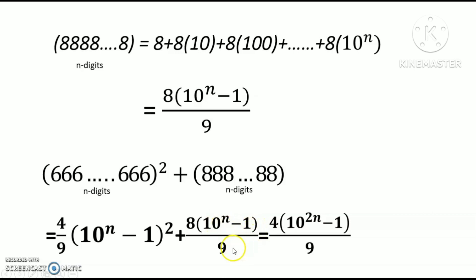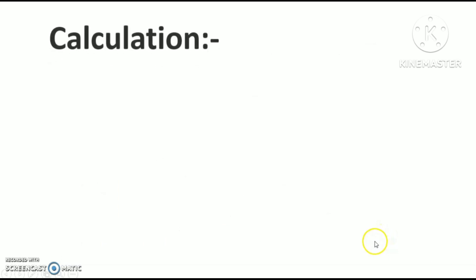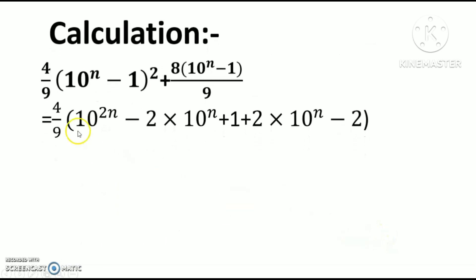(4/9)(10 to the power n minus 1) whole square plus (8/9)(10 to the power n minus 1). Now I expand this. Using the expression (4/9)(10 to the power n minus 1) whole square plus (8/9)(10 to the power n minus 1), and applying the (a minus b) whole square formula, I get: 10 to the power 2n minus 2 into 10 to the power n plus 1, multiplied by the coefficient.